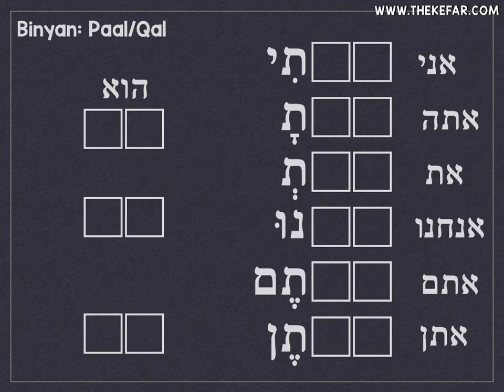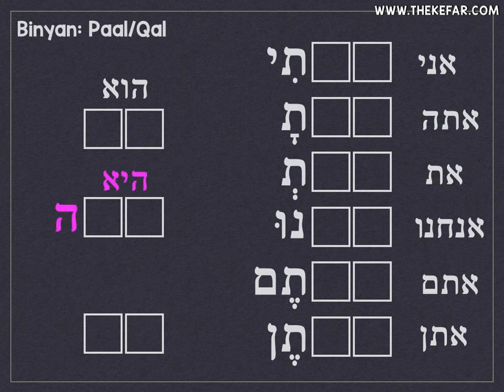Now for the two-letter roots. You'll notice here that instead of our usual three boxes, we have two boxes because we only have two letters in our root. So instead of having an a-a sound pattern for most pronouns, we're going to have just one 'a' sound pattern. For he, it's going to be a-a — so hu and he will have the same conjugations as in the present tense. And hem and hen will be a-u.